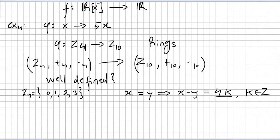So we are in Z_4 here. We are checking if it is well defined from Z_4 to Z_10. We take two elements in Z_4, x and y, and say x equals y. Well that means x minus y will be in Z_4. In order to be in Z_4, it has to have the form 4k.